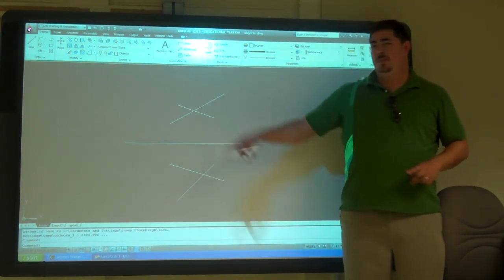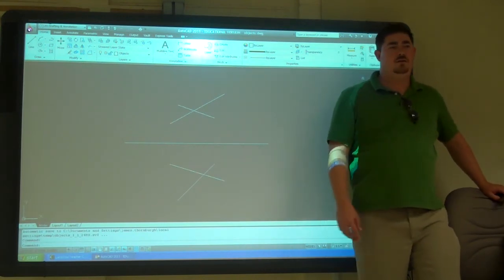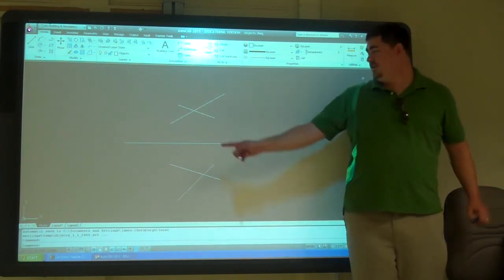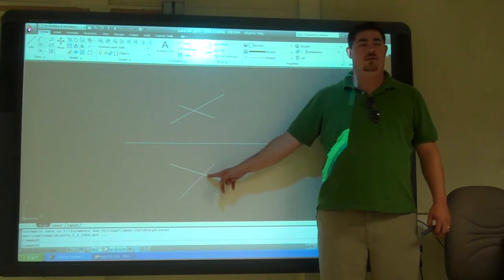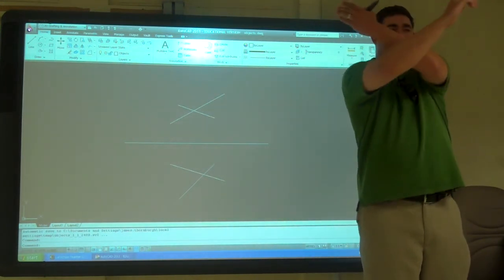How can we tell they're not really touching? Even just from these two views. How can we tell those things aren't really intersecting at one point? The intersecting points are different. Yeah, they're just different. The intersection point here doesn't line up to the intersection point there. So we know that it's not really intersecting.